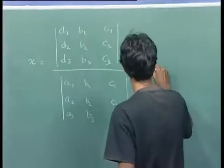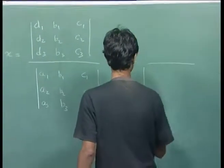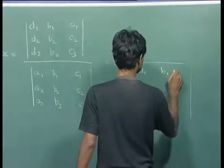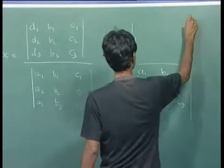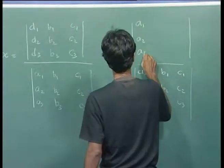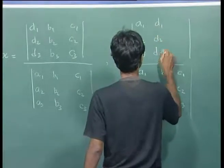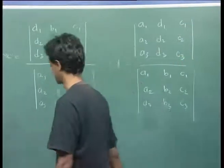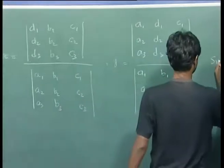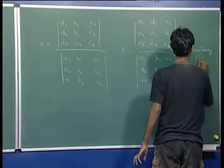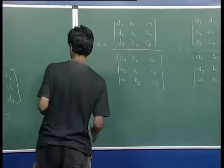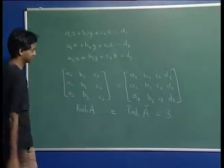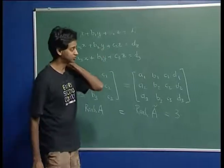Similarly, y is equal to the same denominator, but the numerator has the second column replaced by D1, D2, D3, leaving the other columns as they are. Similarly one can write for z. So we notice that in the solution of linear equations, determinants appear very naturally, and this can be extended to any number of equations using the same procedure.